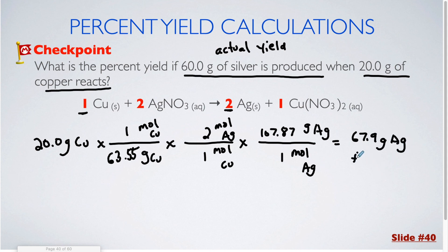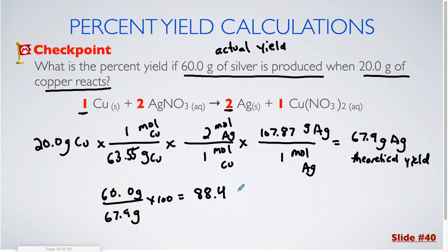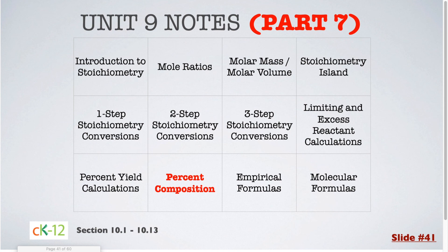So my theoretical yield is 67.9 grams. I had an actual yield of 60.0 grams. I was supposed to have 67.9, and multiplying by 100 and rounding to three significant figures gives 88.4% yield. That concludes part 6 of the unit 9 notes. When we come back in part 7, we are going to be looking at percent composition.